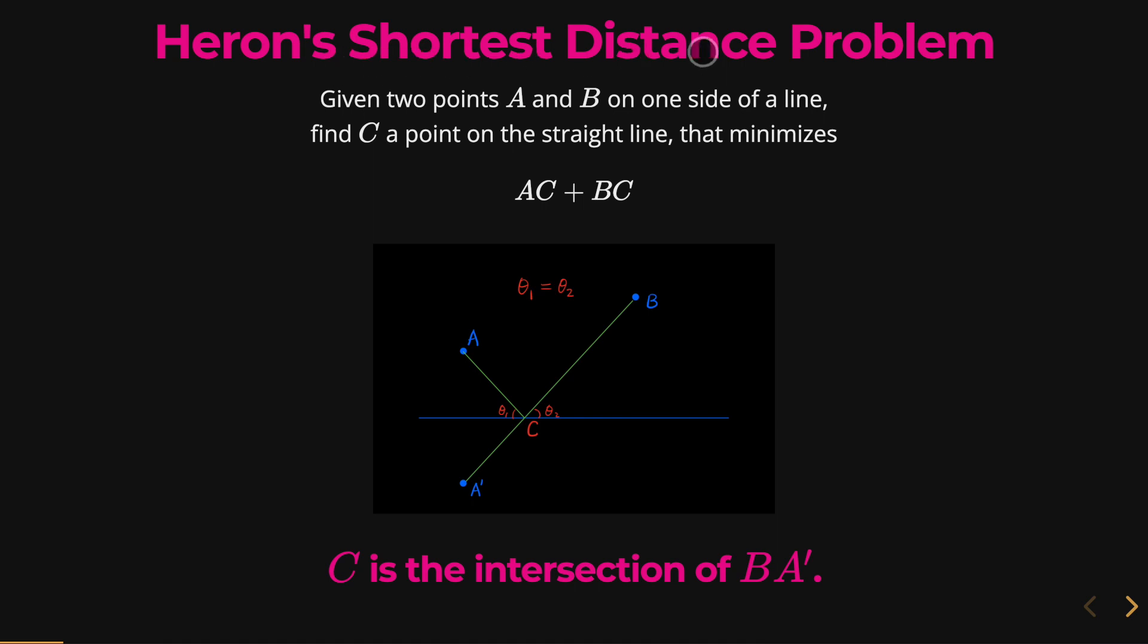So for Heron's shortest distance problem, c is the intersection of B to A' that minimizes AC plus BC.